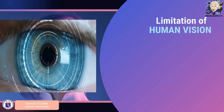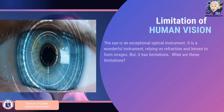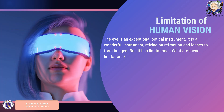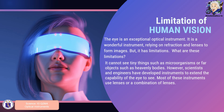We already know how exceptional human vision is. It is a wonderful instrument which relies on refraction and lenses to form images, but it has its limitations. Can you think of something that limits human vision? Human vision is limited in that we cannot see very tiny objects such as microorganisms, and we cannot see far away objects. That is why scientists invented microscopes and telescopes to enable us to see those objects.